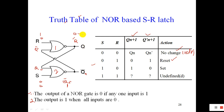We can confirm this with an example. Suppose the previous value of Q is 1, and R=1, S=0. Since any one input of the NOR gate being 1 makes output 0, Q becomes 0. That 0 feeds back to gate number 2 as input. Then 0 plus 0 equals 0, inverted gives 1 for Q bar. So even when the previous value was 1, R=1 makes Q reset to 0.